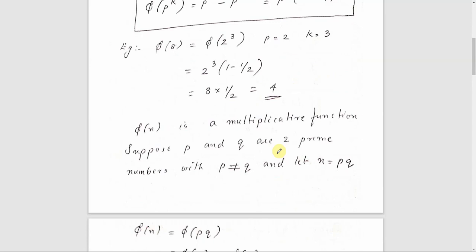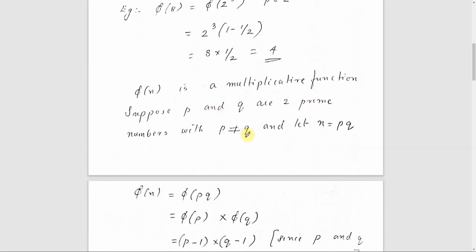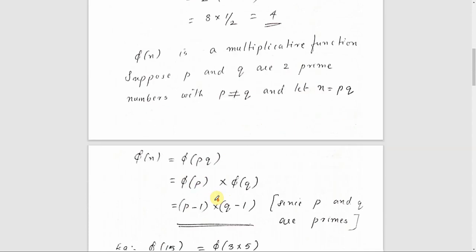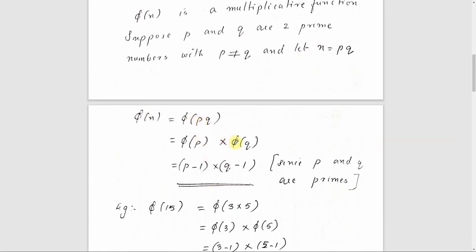Phi of n is a multiplicative function. Suppose p and q are two distinct prime numbers and n equals p times q. Then phi of n equals phi of p times phi of q. Since p and q are prime, phi of p equals p minus 1 and phi of q equals q minus 1. So phi of n equals p minus 1 into q minus 1.